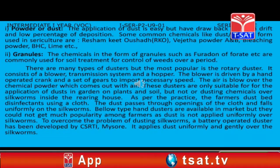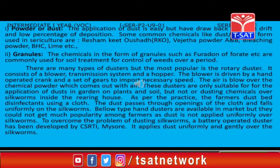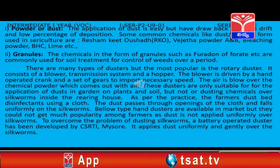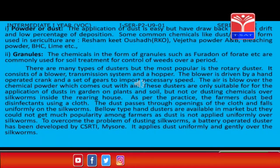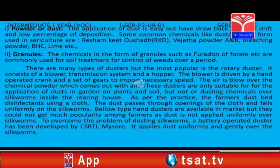A duster consists of a container to store chemical powder through which air current at high velocity is passed. The air current is created through an air bellows or a rotary fan. There are many types of dusters, but the most popular is the rotary duster. It consists of a blower, transmission system, and a hopper. The blower is driven by a hand-operated crank and a set of gears to impart necessary speed.